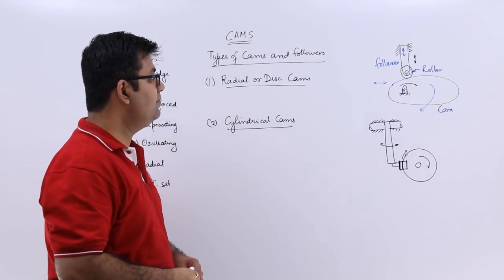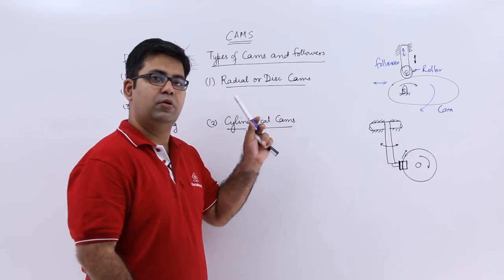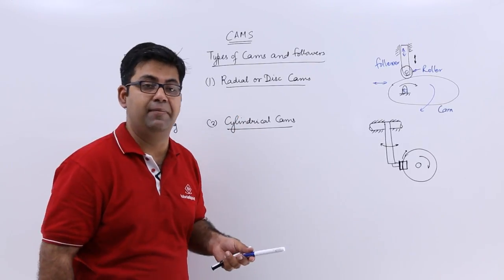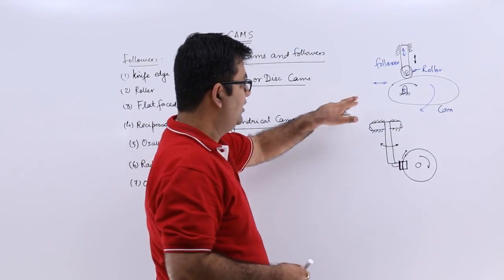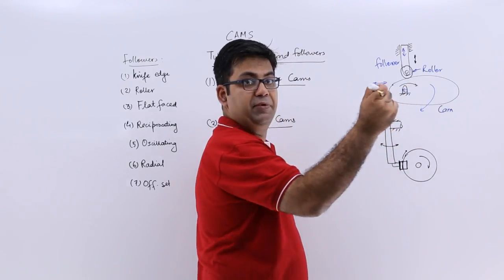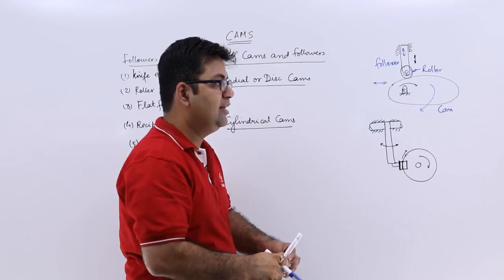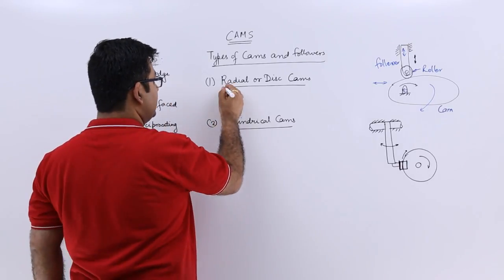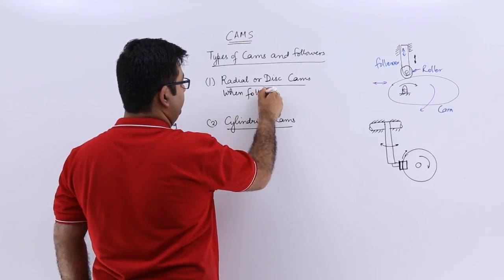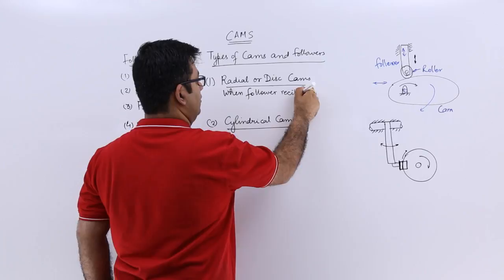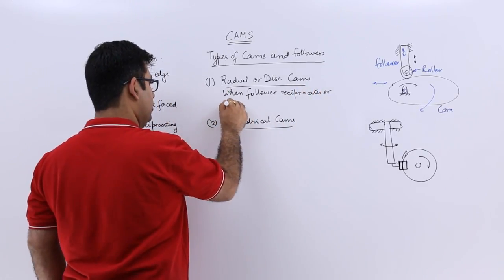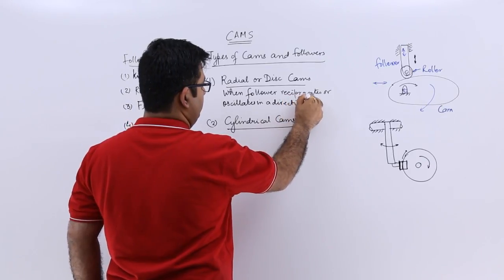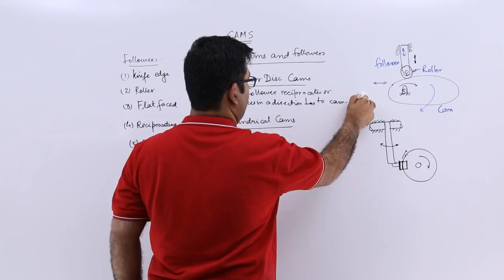This is called a radial cam and a reciprocating follower. The definition is that when a follower reciprocates or oscillates in a direction which is perpendicular to the axis of the cam, it is called a radial cam. The axis of the cam is this pen coming out of the plane of the board, and the follower is reciprocating in this direction.